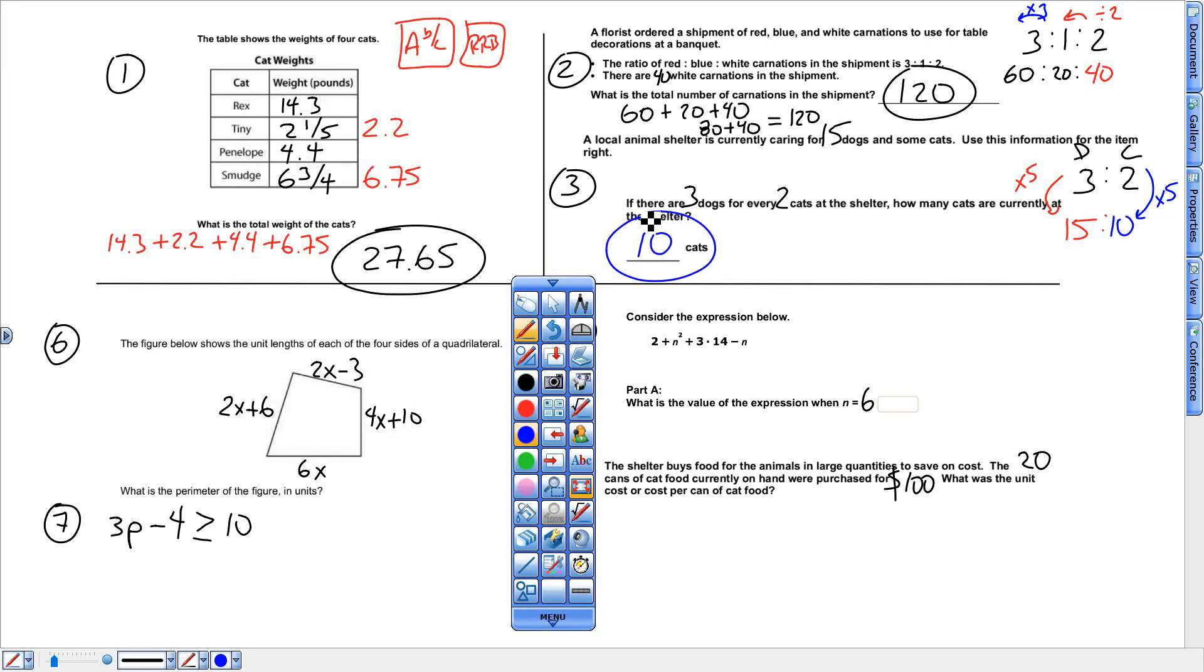All right, this one, plug in 6 for the letter. And second word is maize. Maize. Here I go. 2 plus that 6 to the second power, which means 6 times 6, not 6 times 3, plus 6 times 2, 3 times 14 minus another 6 right here. Order of operations.